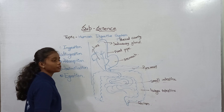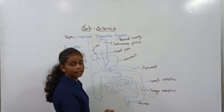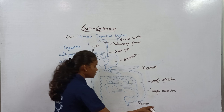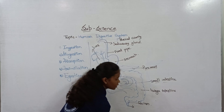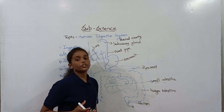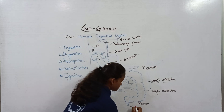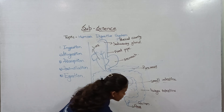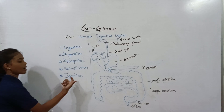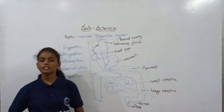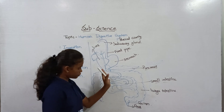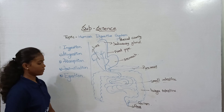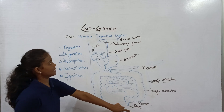The rectum releases feces and transfers the undigested food to the anus. Through the anus, the egestion process begins — the food completely exits the body through the anus.